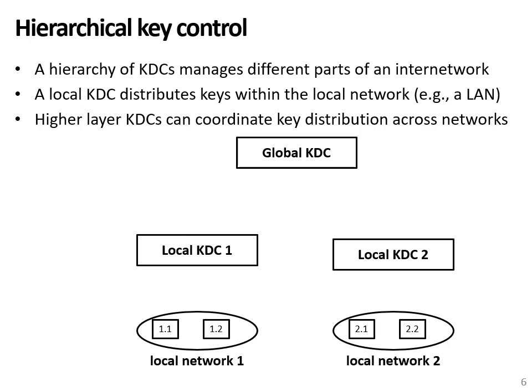Let's say a node in local area network 1, node 1.1, wants to set up a session with another node, node 1.2, in the same network. In this case, key distribution happens in exactly the same way as before — only a single key distribution center, KDC1, is involved. The node requests a session key for communication with node 1.2 and receives this session key in response, which it can then share with node 1.2 in the same way as explained before.